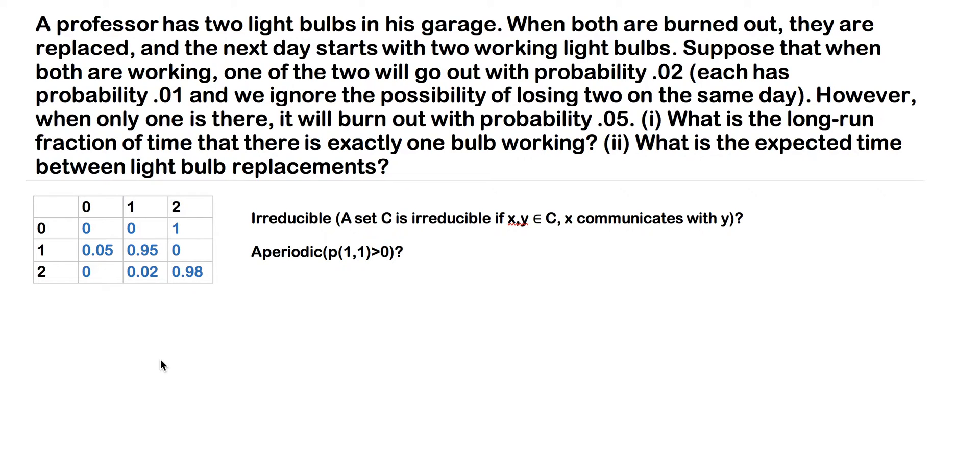Before we start, what we need is a transition matrix for this Markov chain. This is typically denoted P, and I've already put it up on the board here. I'm going to go through how I got each one of these numbers in blue for this transition probability. It comes straight from the question—it's not that difficult. I'll quickly go through it, then we can move on to this long-run fraction of time.